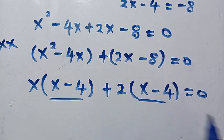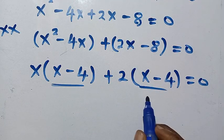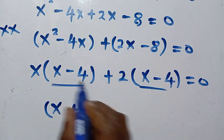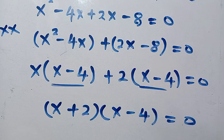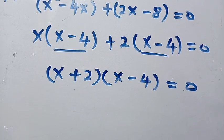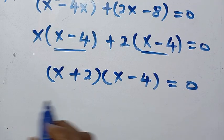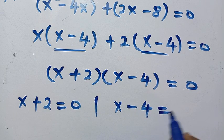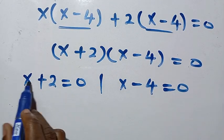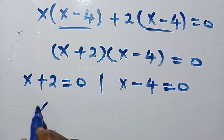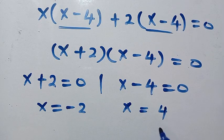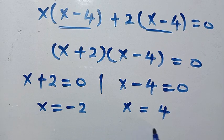Since x minus 4 is common in both groups, we factor to get x plus 2 times x minus 4 equals 0. Setting each factor to zero: x plus 2 equals 0 gives x equals minus 2; and x minus 4 equals 0 gives x equals 4. This x equals 4 is the same solution we got before, and x equals minus 2 is another solution. So these are two of the four solutions that satisfy this problem.